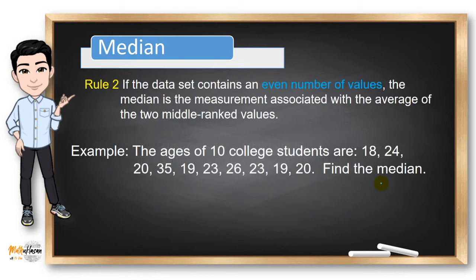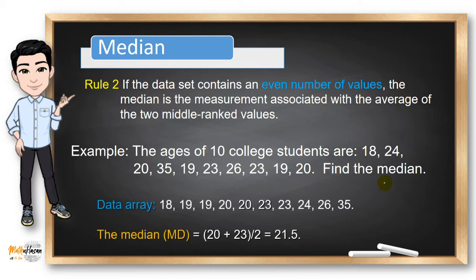In the next example, the ages of 10 college students are given. Find the median for this data set. So if we're going to order this data set, we can see here this array. Now we can see here that the sample size is 10. Therefore, this is an even number of values. So we need to use rule number two.